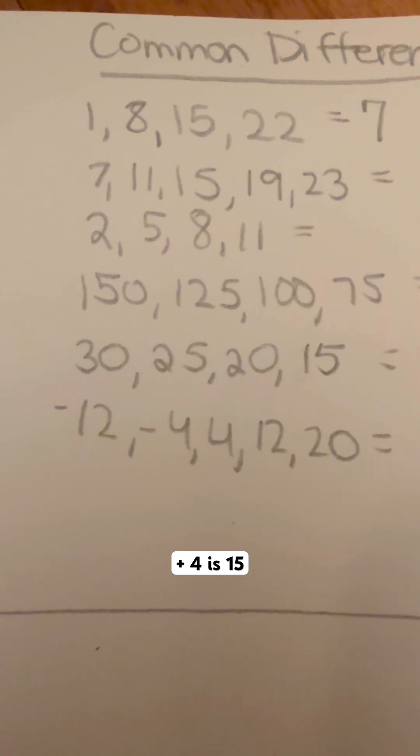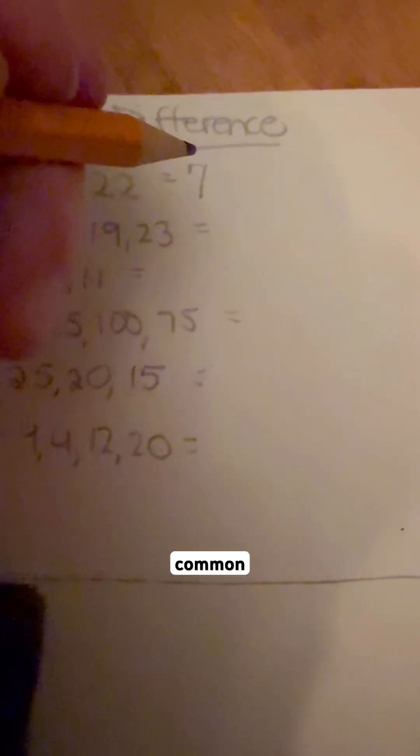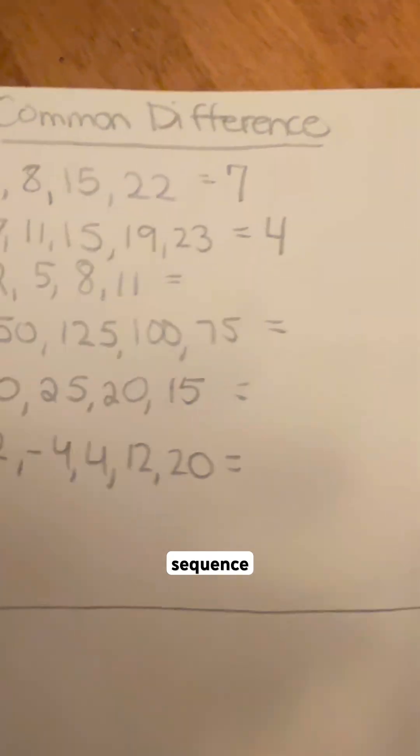11 plus 4 is 15, plus 4 gives you 19, plus 4 gives you 23. So your common difference in this arithmetic sequence is 4.